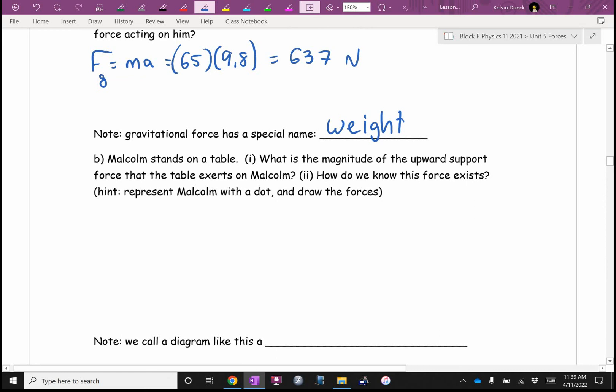How many newtons exactly? We just calculated it. But look at him. Is he sinking into the ground like quicksand? Is he flying into the air like Superman? That means the forces have to be, I'm looking for a word that starts with letter B. So if gravity is pulling down on him with 637 newtons, how hard must the table be pushing up on him through his feet? Exactly.